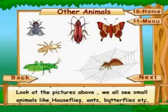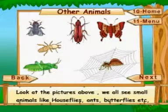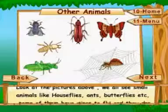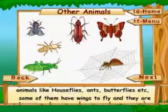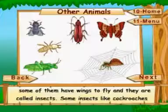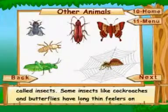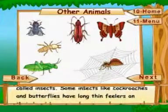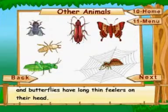Other animals. Look at the pictures above. We all see small animals like houseflies, ants, butterflies, etc. Some of them have wings to fly and they are called insects. Some insects like cockroaches and butterflies have long, thin feelers on their head.